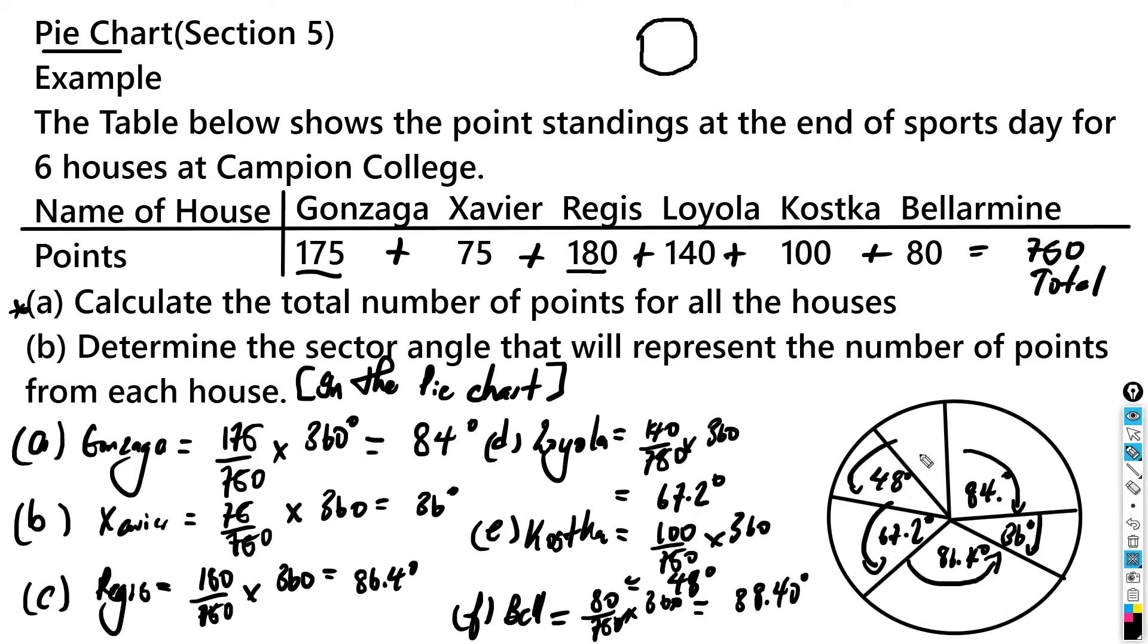Cool. So we've done the pie chart, and this pie chart shows us which sector is really the dominant sector. Obviously the two teams that dominated were Gonzaga and Regis, which is how it was in my days, and close by was Loyola, which is how it was in my days as well. That's how we use pie charts. We basically use them to see who has the bigger sector, how are things in comparison to the others that we're involved in.